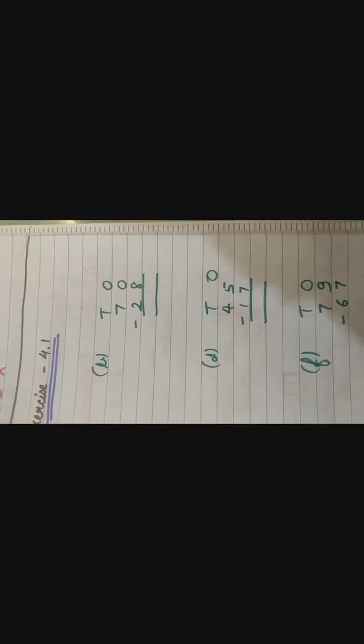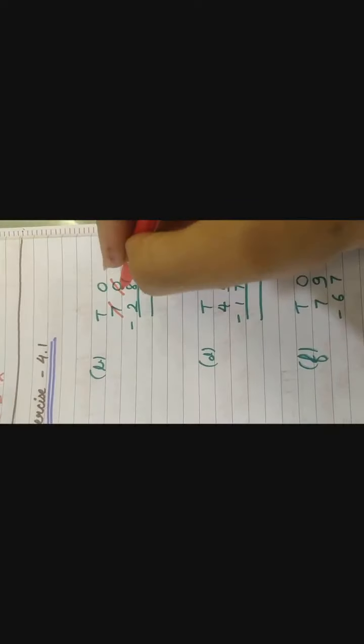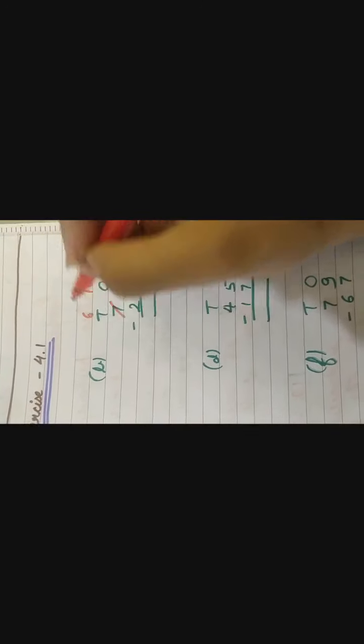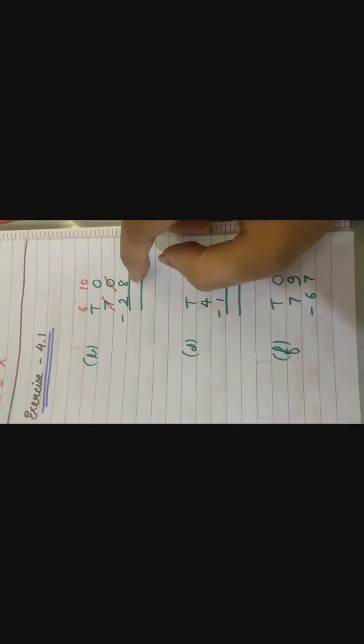Now the next one. 70 minus 28. 0 me se 8 cheezay ga? No. If you are having 0 things, can you subtract? No. You have to borrow. Kya kia? 7 ne esko apna 1 diya. To it will become 10 and 7 ka 6. Now let's borrow. 10 minus 8, 6 minus 2. Now start.